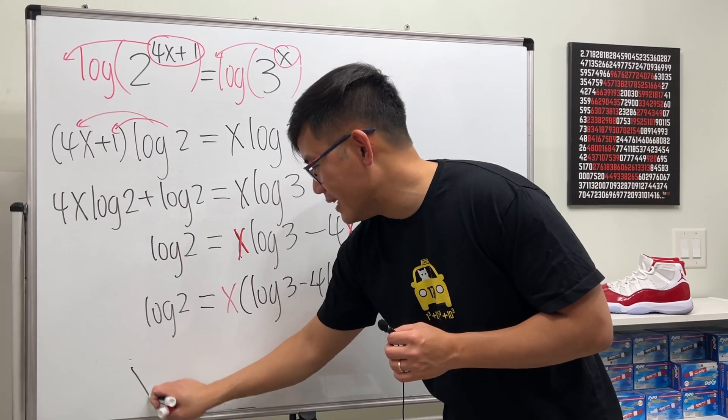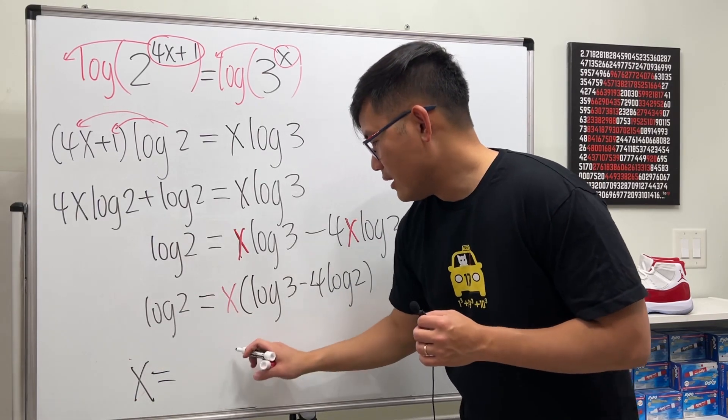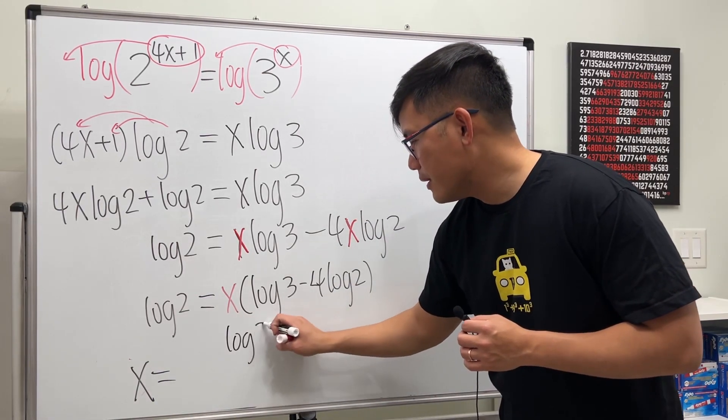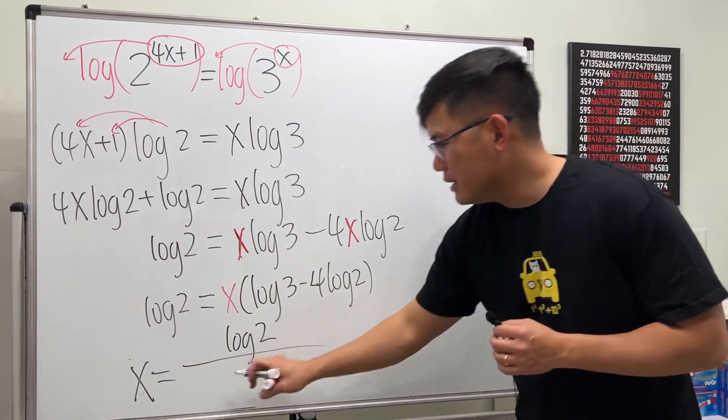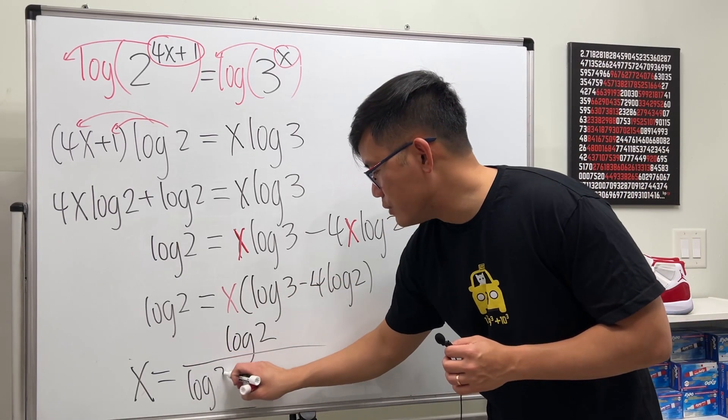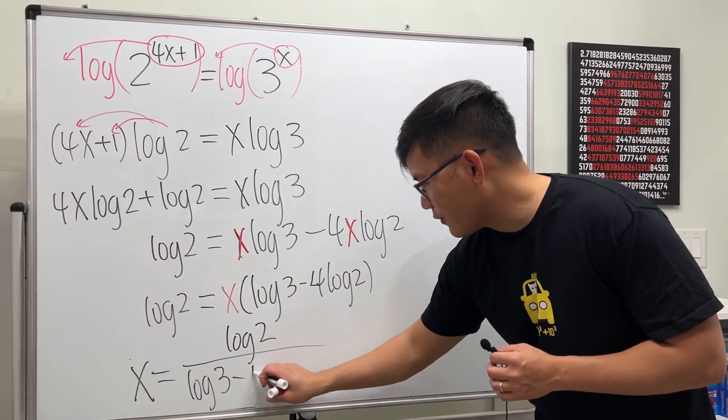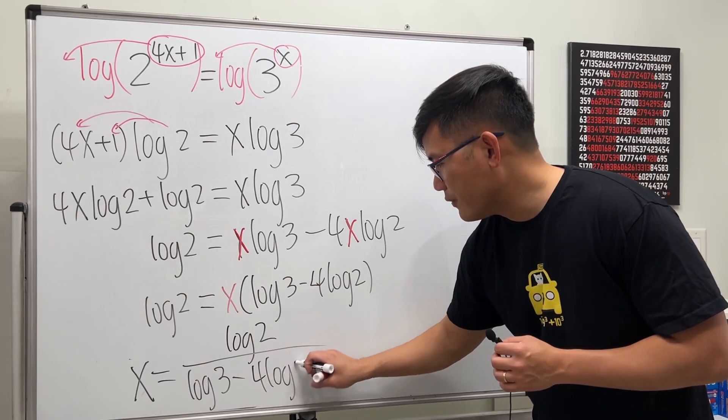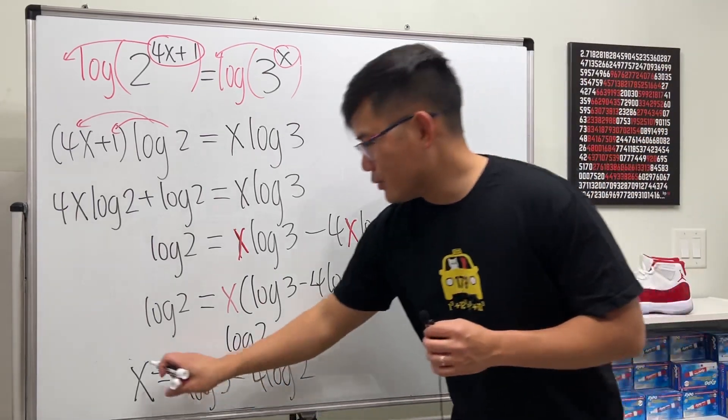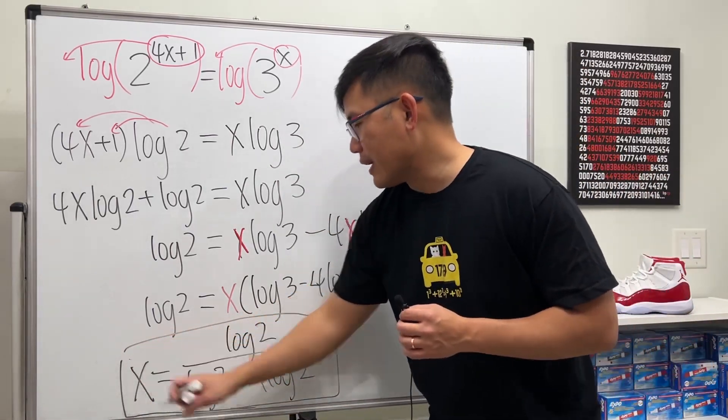So ladies and gentlemen, x equals log of 2 on the top, over this, which is log of 3, minus that, which is 4 log of 2. So this will be a pretty nice expression for that.